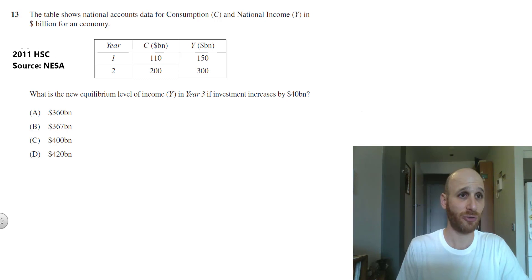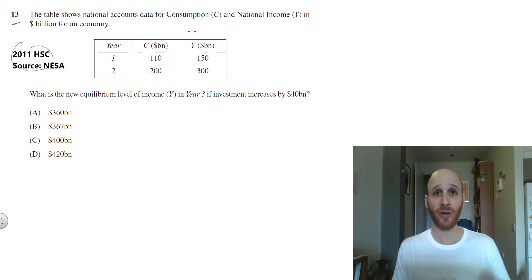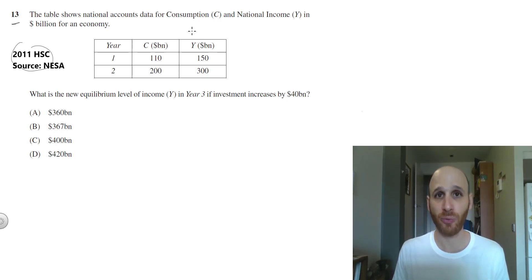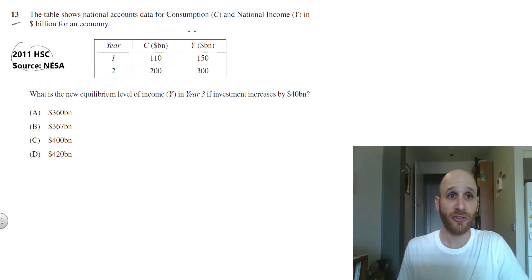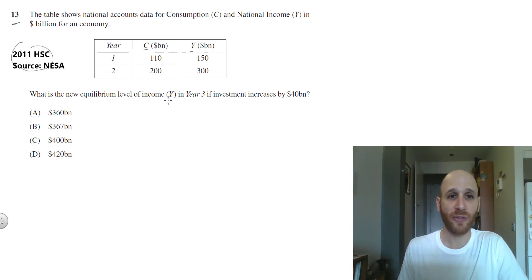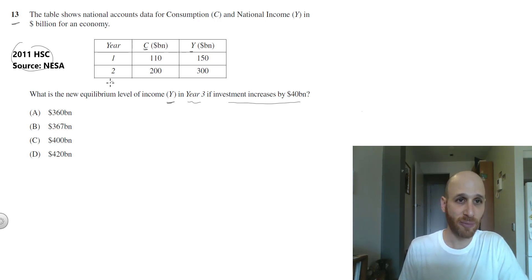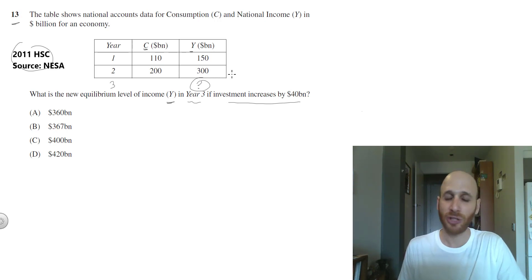In this question we're looking at the 2011 HSC question 13. As with the other questions I'm going to go through it with the worked solution, so you might want to pause the video, give this a go yourself, and then have a look at the worked solutions. The table shows national accounts data for consumption and national income in an economy. The question asks us what is the new level of equilibrium income in year three if investment increases by 40 billion.